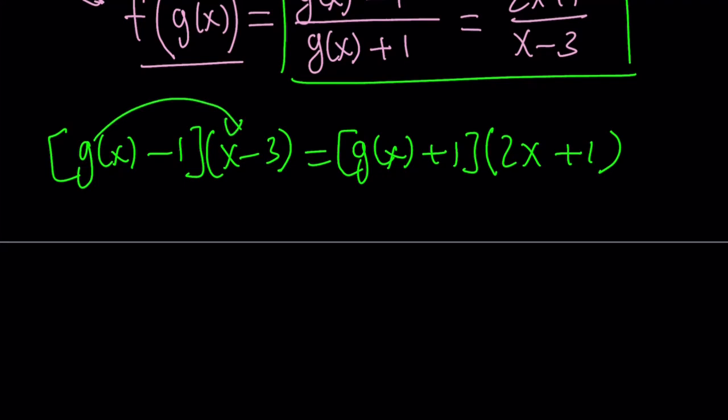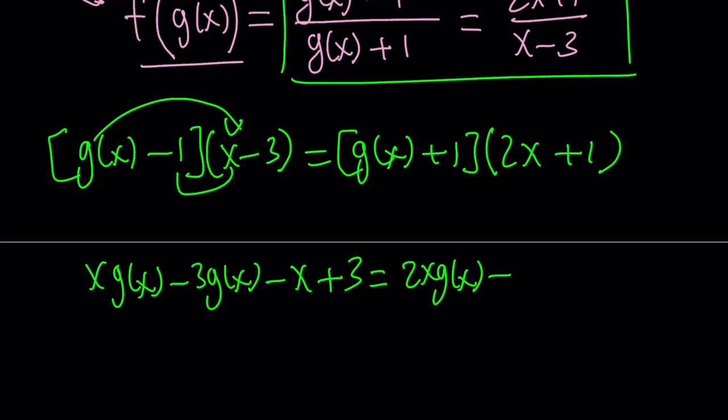g(x) times x, I can write it as x g(x), and just continue to distribute. I think you guys are smart, so you can get this. The left-hand side gives me this. And the right-hand side, if you distribute, you get 2x g(x) plus g(x) plus 2x plus 1. Awesome.